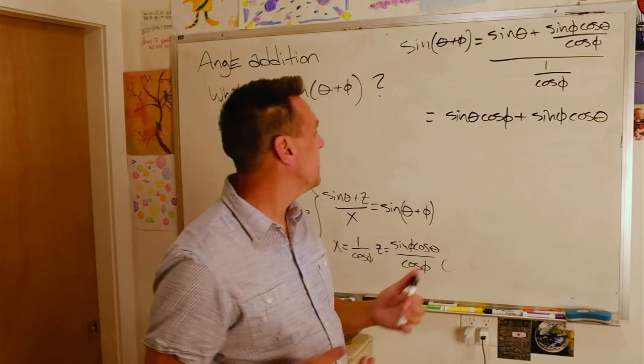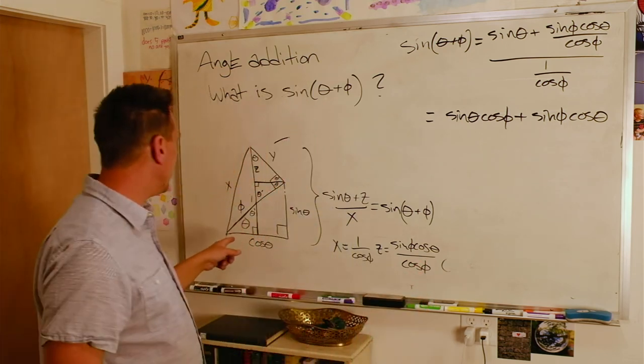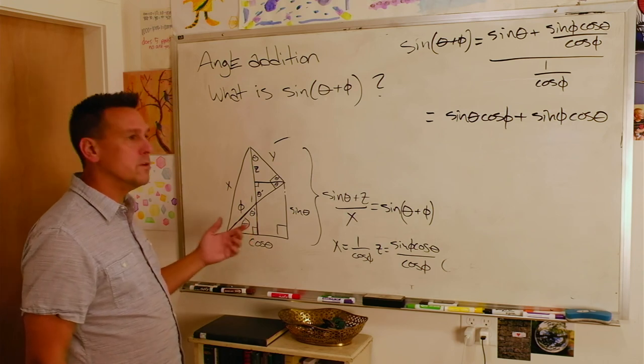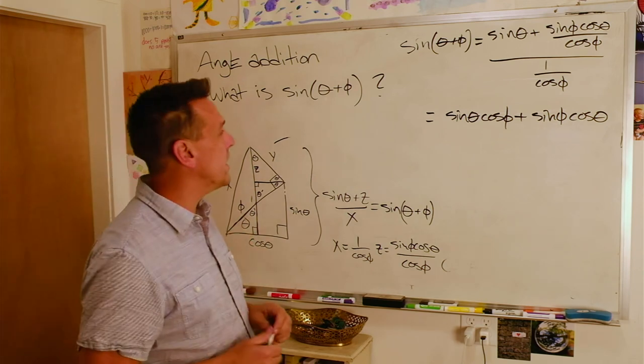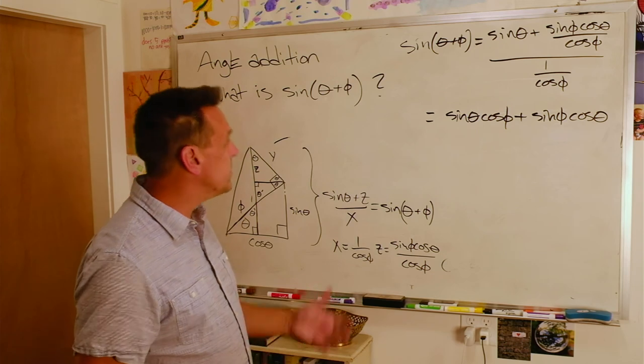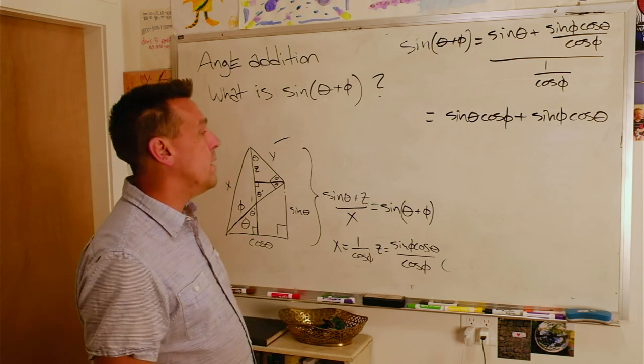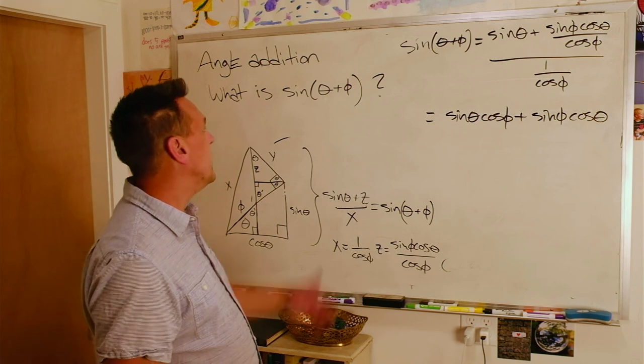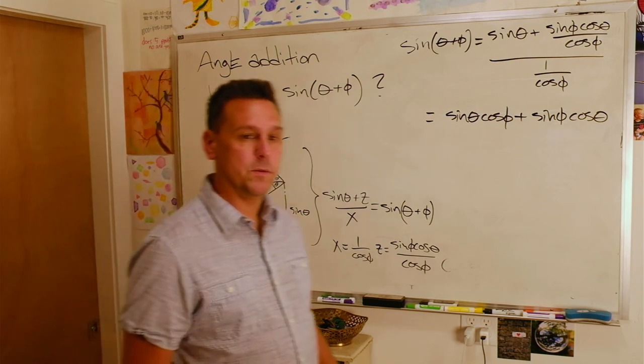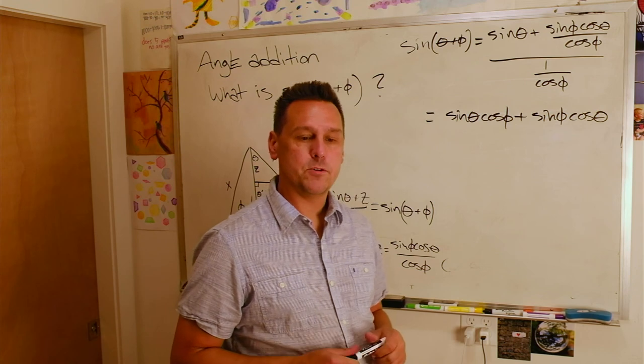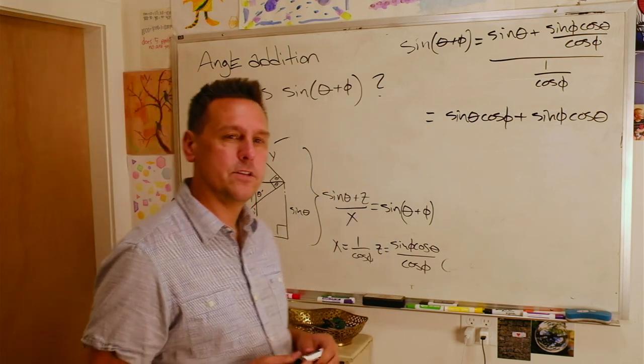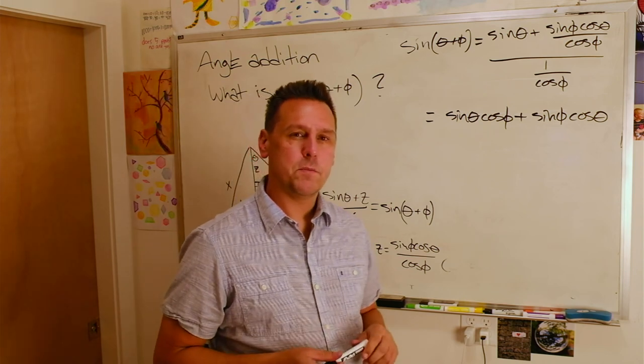So from there we could also probably figure out, I bet you're imagining, the cosine. It doesn't look like it'd be too hard to figure out. Probably can figure that out from the same picture. And certainly knowing about the parity of the sine and cosine functions, we could figure out an angle subtraction formula from there with just a little bit of algebra. I hope this has been helpful and that the angle addition formula is not as much of a mystery as it once was.